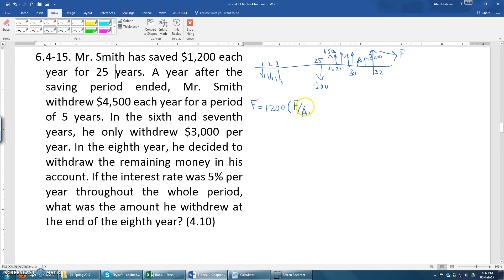So $1,200 accumulated value will be F over A, and the interest rate is 5% per year, 5% for 25 years. So this accumulated value will be at the end of 25 years. This should be further compounded for eight years, so this will be further compounded to eight years.